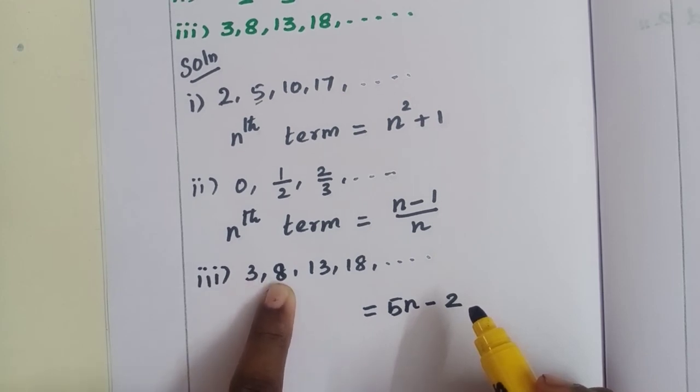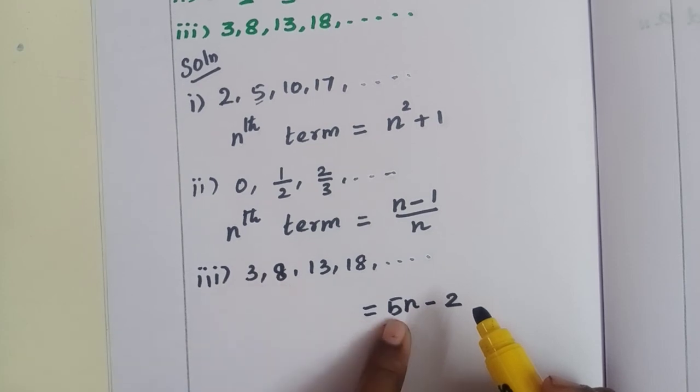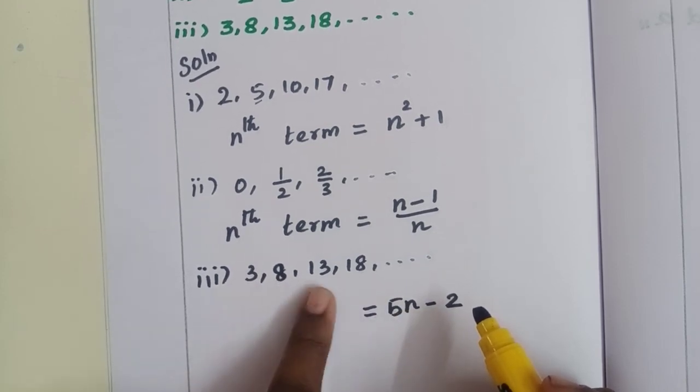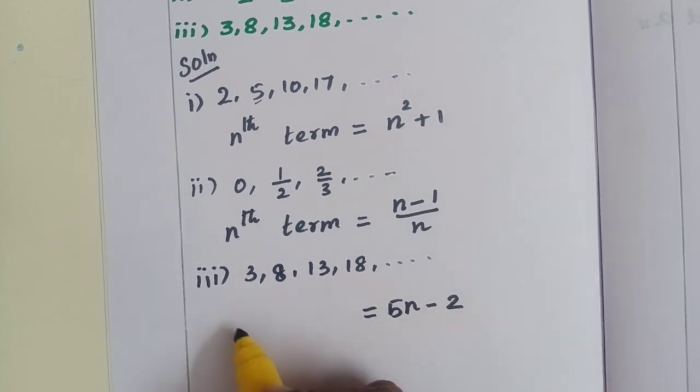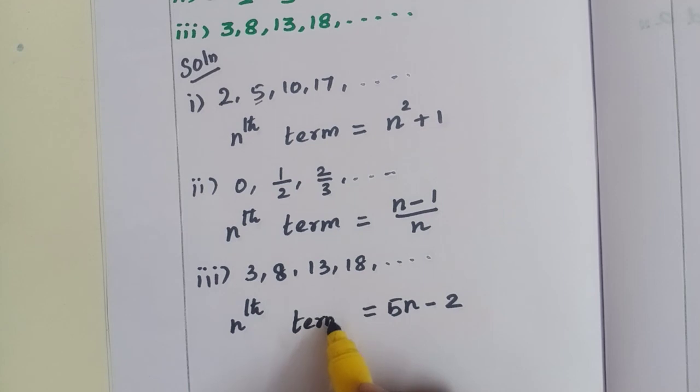N is 2: 10 minus 2 is 8. N value 3: 15 minus 2 is 13. N is 4: 20 minus 2 is 18. So the nth term is equal to 5n minus 2.